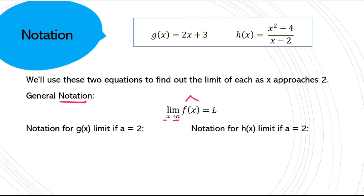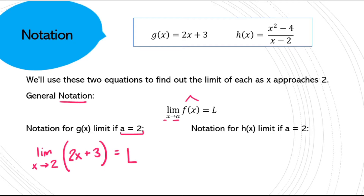If we wanted to take g(x) and put it into that notation — and notice I've said a is going to be 2 — so the limit as x approaches 2 of the actual equation of the function. We can figure that out, but for now we'll just leave it as L. And the same for h(x), where x is approaching 2 and this is the equation of the function.